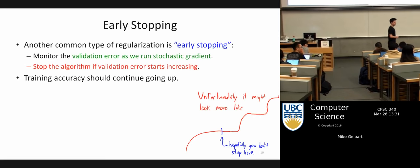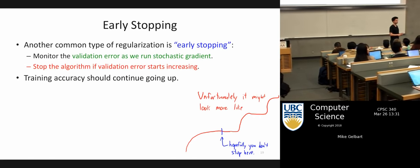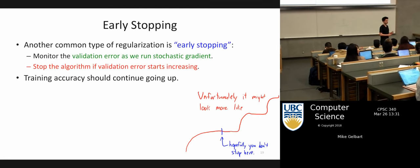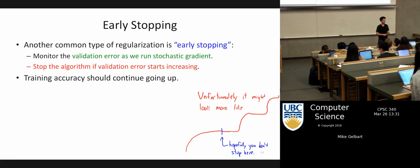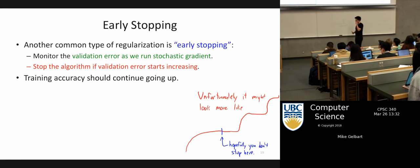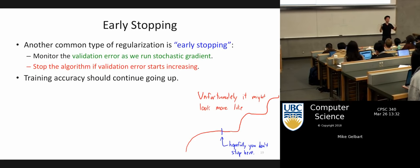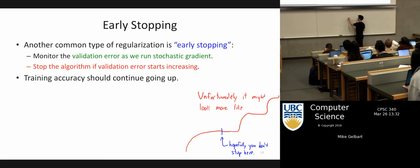Student question: can you checkpoint your neural net — store the current configuration — and then in the end look at where your validation error was the lowest and stop there? Yes, you can checkpoint your neural net and store the weights at any iteration. Then at each checkpoint, compute the validation error and take the best one. Typically, you probably wouldn't see the validation error go back down after going up, so if it started going up you'd just be done. But you're right — if it could happen, then checkpointing and keeping the best makes more sense.